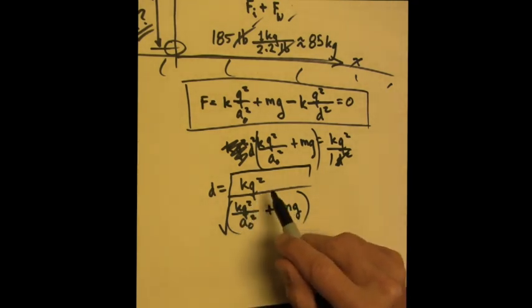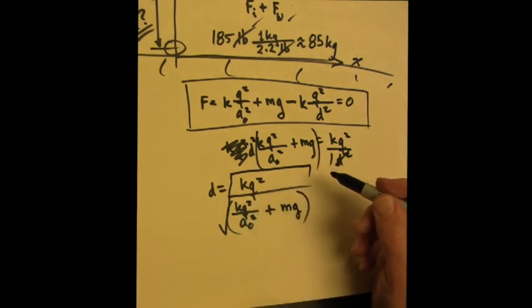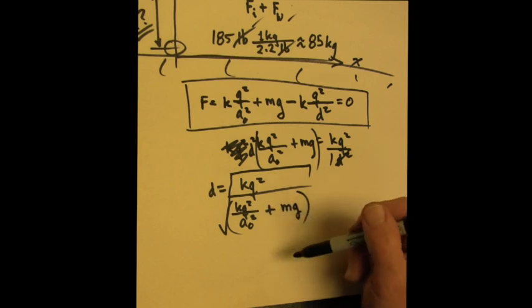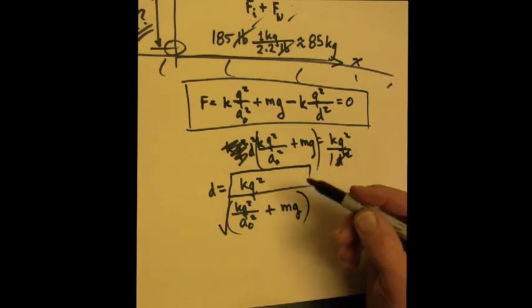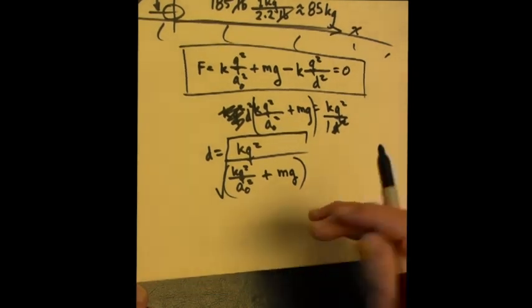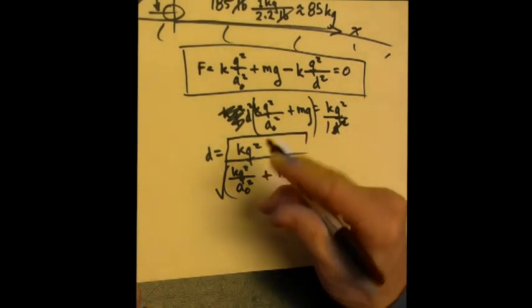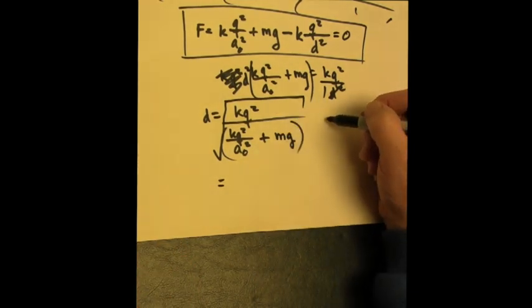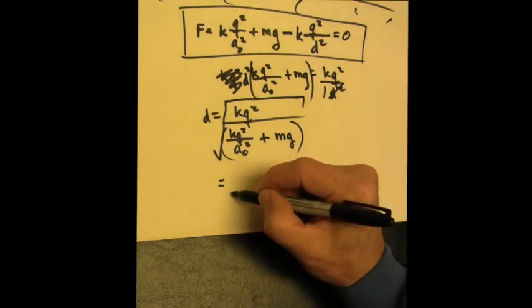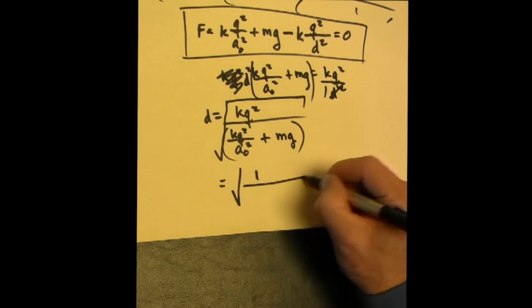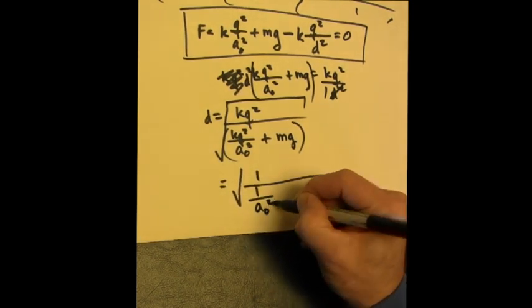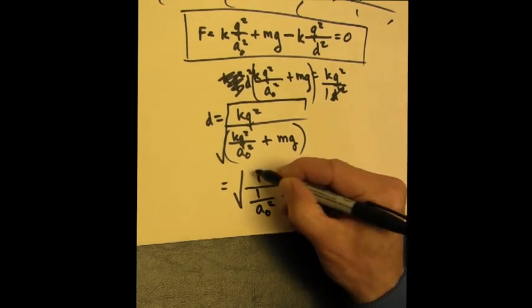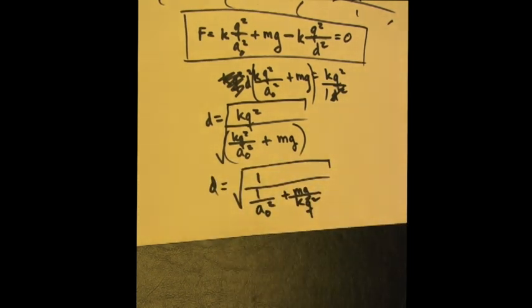You guys should take a moment and convince yourself of the units the same way we did that for the earlier problem. You can also do this mathematics. You can mess around with this a little bit. Well, I'll write one more step in the manipulation, which I think makes it a touch easier, but whatever. I'm just going to divide or multiply this by 1 over KQ squared over 1 over KQ squared, which means I'm going to have 1 over 1 over A0 squared plus Mg over KQ squared. And that's my D, and I'm done.